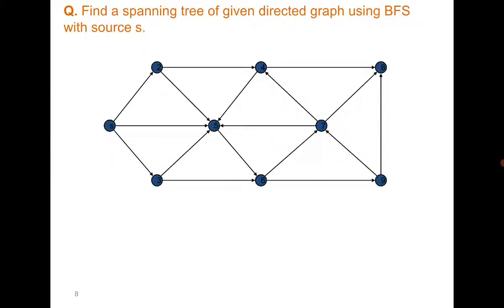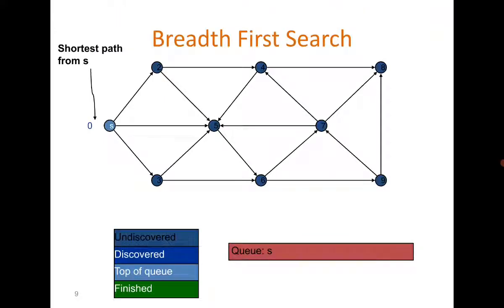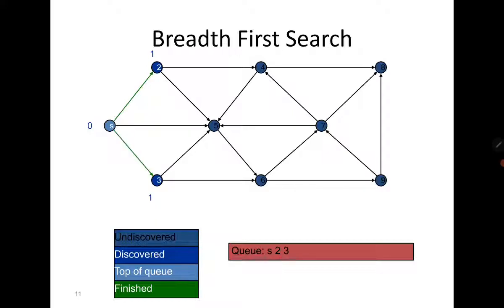Let's quickly try one more question. This is a directed graph; we start with S. From S I can go to 2, 3, and 5. So I have added 2 to the queue, then 3, then 5.